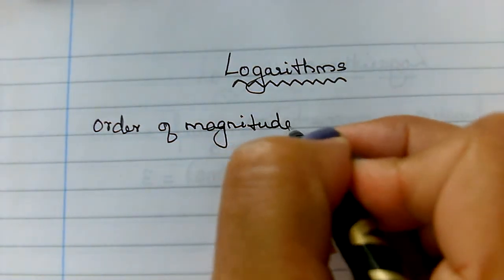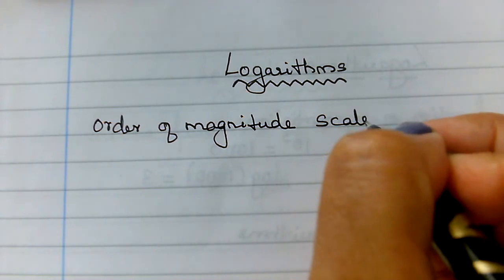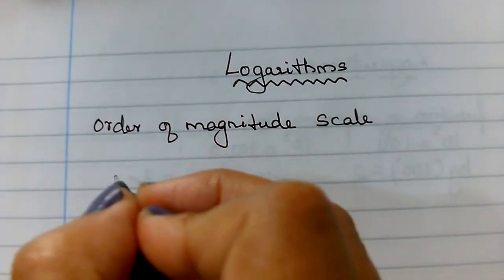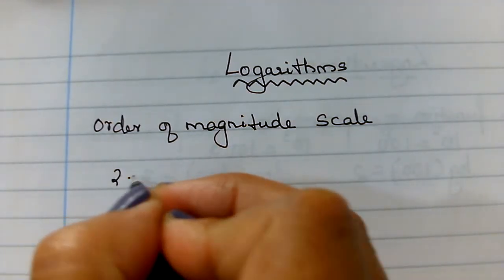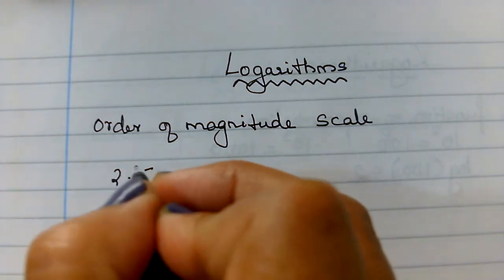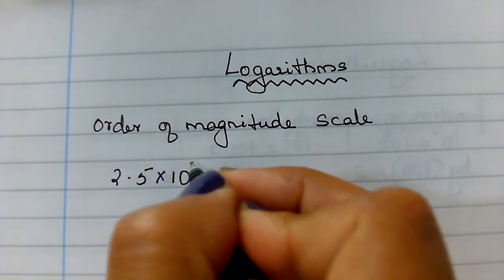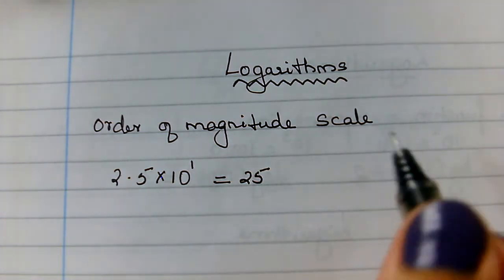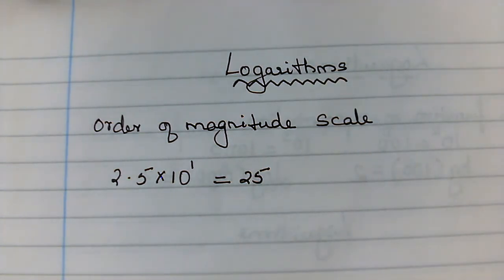Order of magnitude scale. Now, just to make it clear, what do I mean by this order of magnitude? If I have 2.5 times 10 to the power 1, which is the standard form of writing 25. So 25 can be written in standard form as 2.5 times 10 to the power 1.